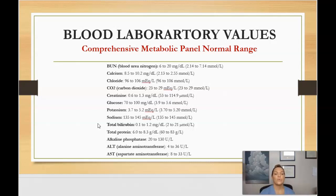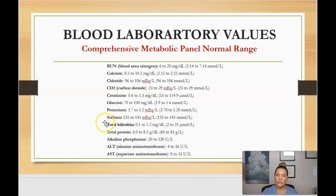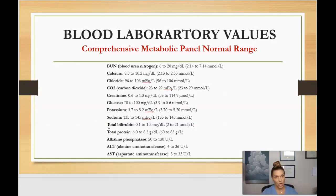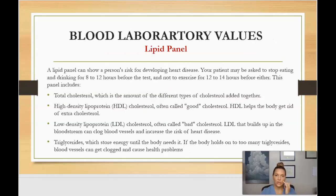You will see the ALT and AST elevated in somebody who has cirrhosis of the liver, liver cancer, or any other liver issues — those numbers are usually very elevated. Regarding total bilirubin, patients who have recently had any type of problem with their liver or gallbladder — for instance, a gallbladder attack — will often have elevated bilirubin as well.